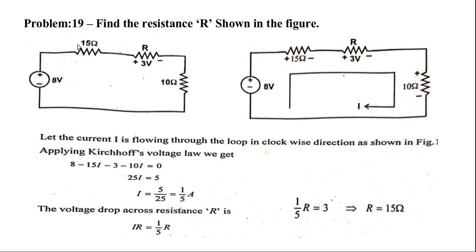The current I flows counterclockwise. What we usually do is apply KVL. Going around the loop: negative terminal to plus terminal is positive; if it enters positive, it is negative. So: 8 minus 15I minus 3 — this voltage is negative — gives us minus 15I equal to 0.